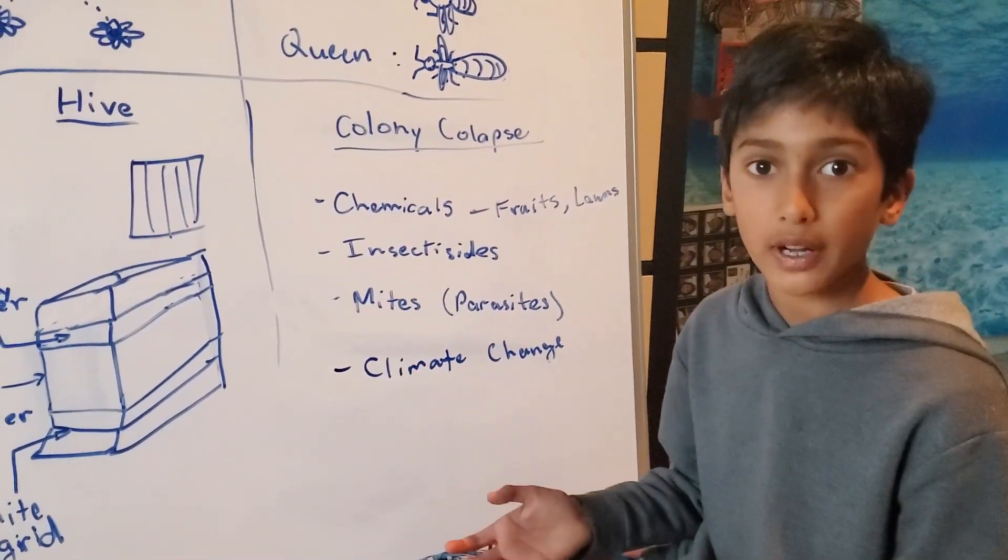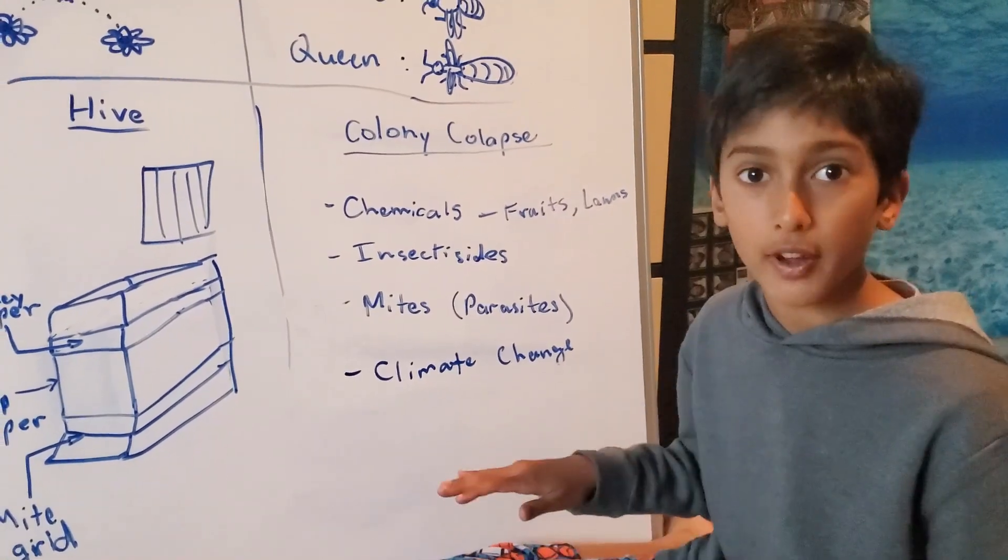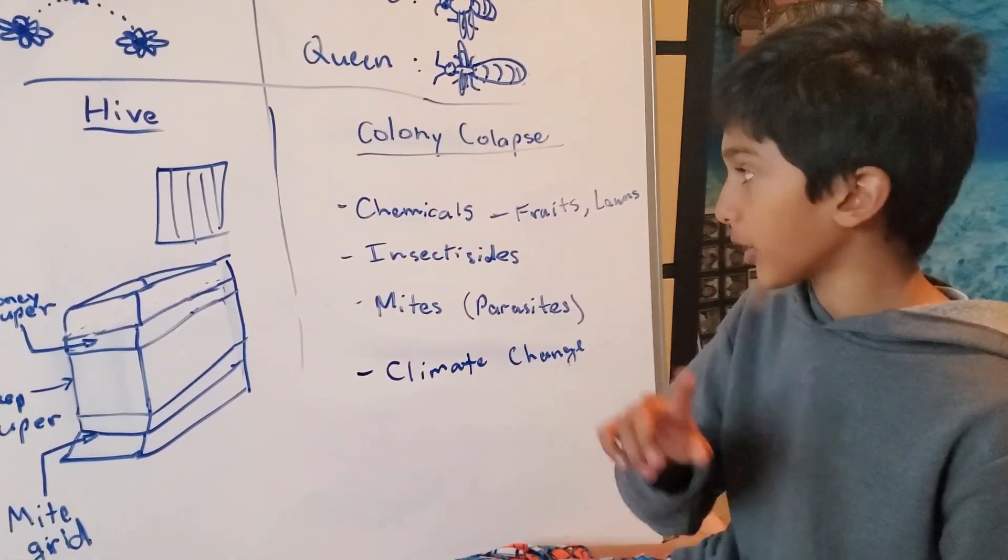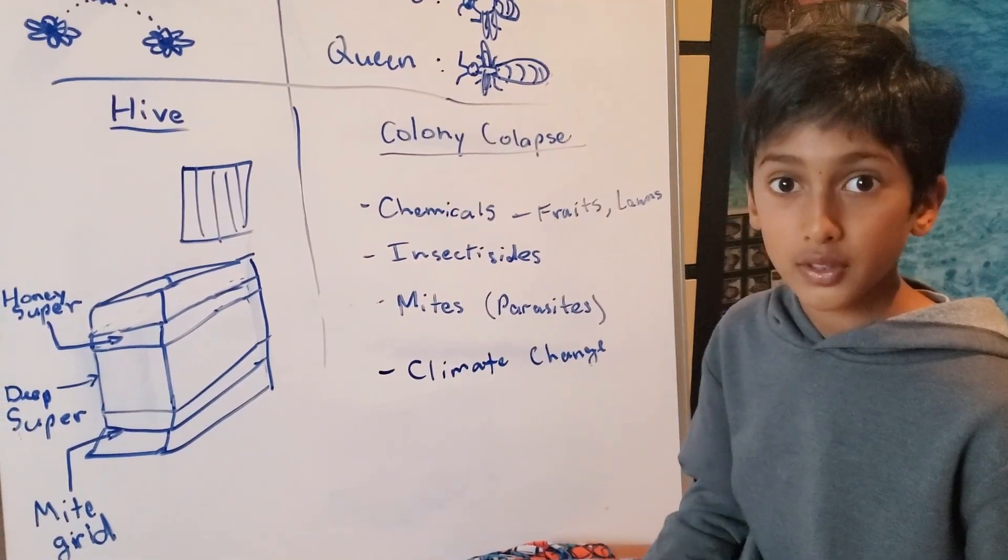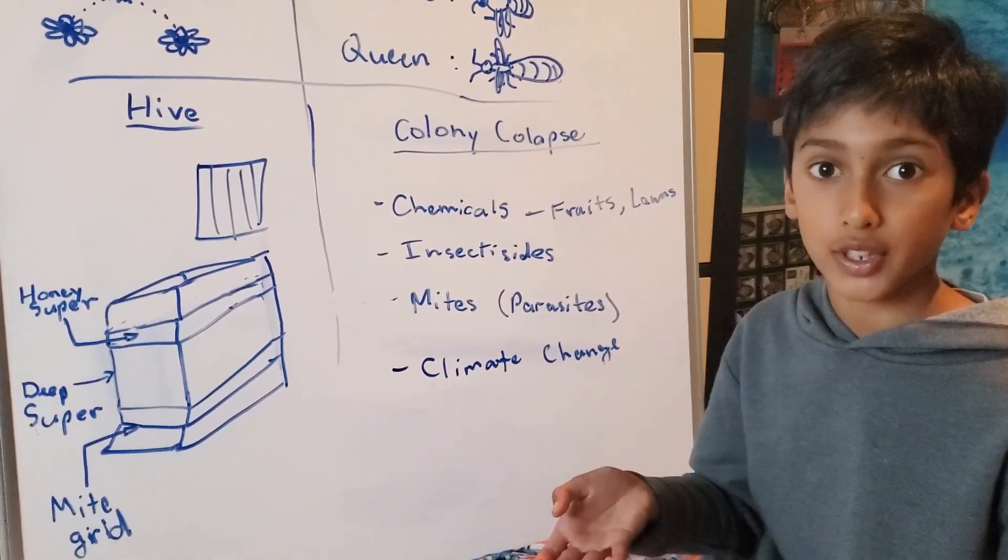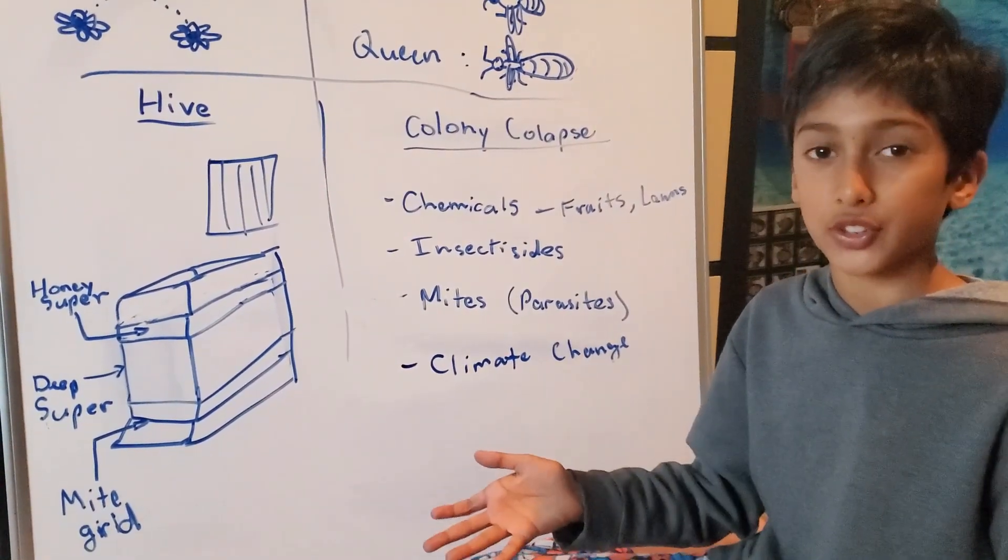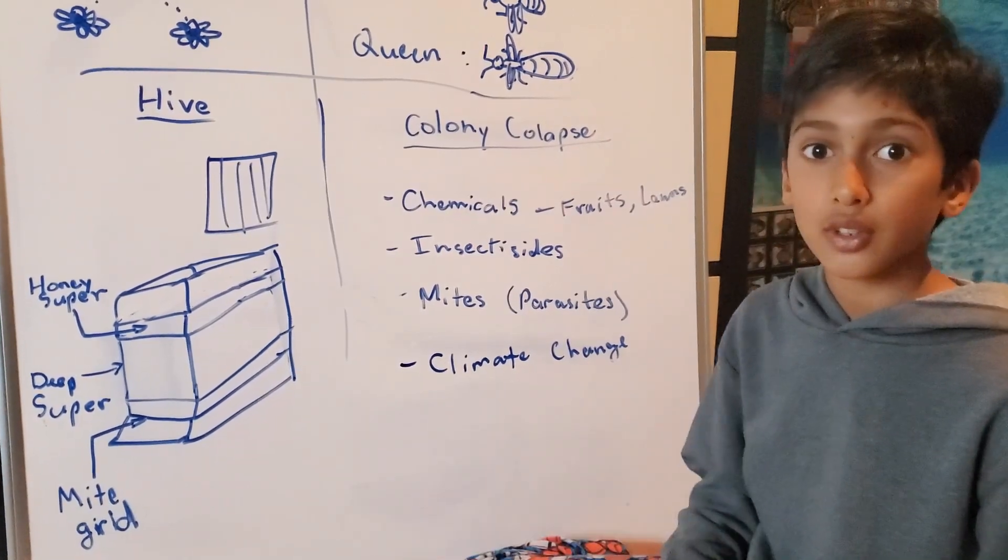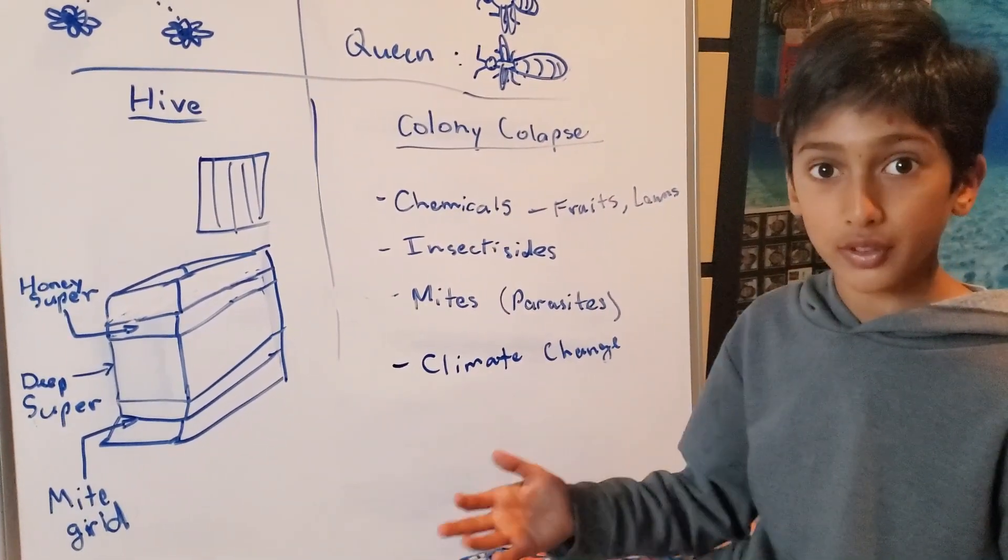When we want our fruits and vegetables to be perfect, we spray chemicals like insecticides on them. This protects them from bad insects as well as good insects such as bees. Bees die because of this.